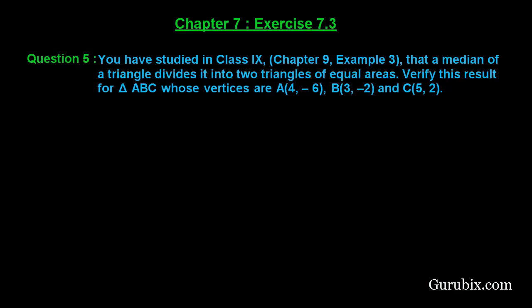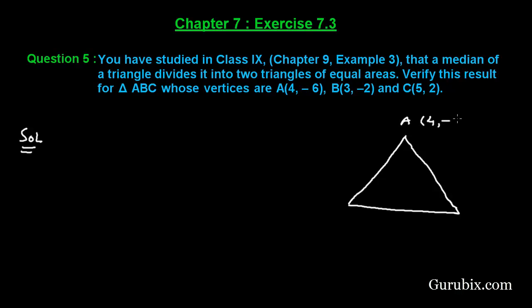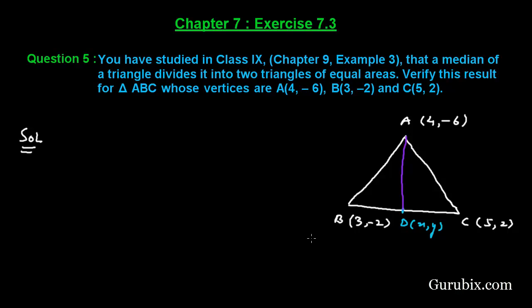Let us see how to solve this question. Let us first draw a rough sketch of triangle ABC. This is A with coordinates (4, -6), this is B with coordinates (3, -2), and this is C with coordinates (5, 2). We know the definition of a median: when we join the midpoint of a side of a triangle to the opposite vertex, that line is called the median. Suppose D is the midpoint of BC, with coordinates (x, y). If we join A with D, then line AD is the median of triangle ABC.